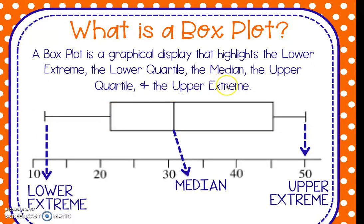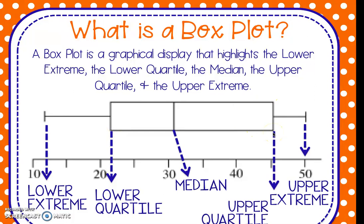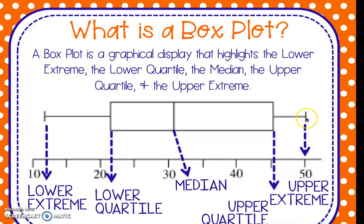There are two other lines on here as well. This one represents our lower quartile and this one represents our upper quartile. So looking at a box plot, it's very easy and very quick to see all of our pieces. The first line is your lower extreme. The next line, or the outside of the box, is your lower quartile. The line in the middle is our median. The other line on the other side of our box is our upper quartile, and then the farthest one is your maximum or upper extreme.